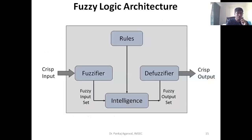This is how we can represent a small architecture of a fuzzy system, where the rules go into the fuzzy inference system — which we call the intelligence. Then we have a fuzzification module which takes the input, and then a defuzzification module which produces the crisp outputs.